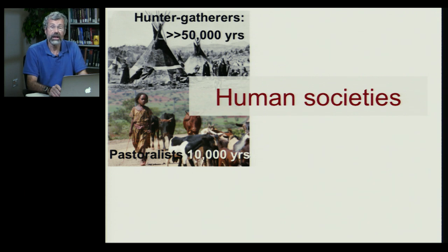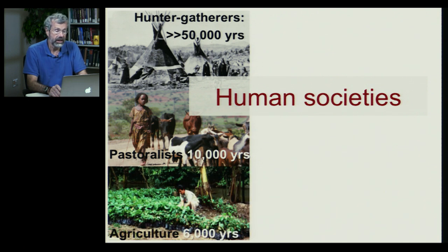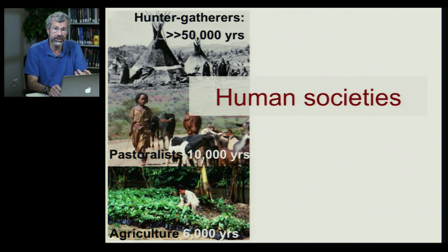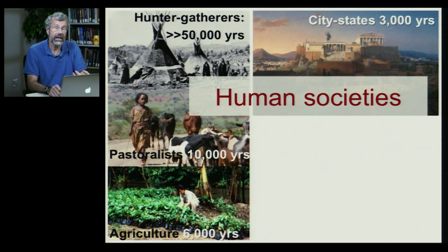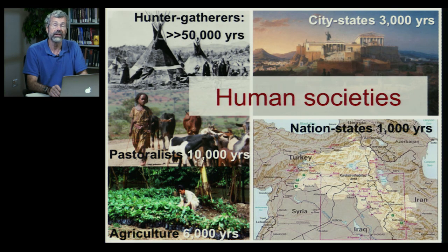At some point, about 10,000 years ago, humans domesticated livestock and became pastoralists — instead of relying on wild prey, they kept their own. A profound transformation took place with the origins of agriculture about 6,000 years ago. For the first time, people could stay put year after year, and it's after this that we see the origins of first the city-states, typified by Greece and Rome, and more recently the nation-states, identified by a large group of people over a geographical area.